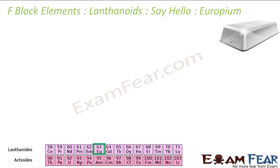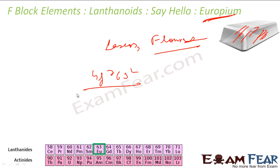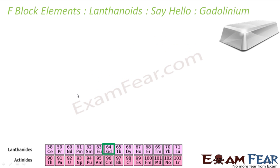Europium is the first element named after a continent — Europe. It is a hard, ductile, silvery metal that readily oxidizes in air. It is used in lasers and fluorescent lamps. Its electronic configuration is 4f⁷ 6s².